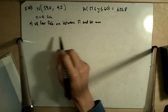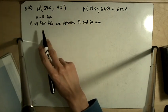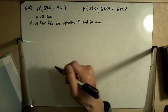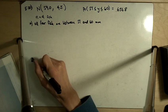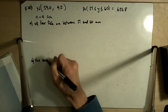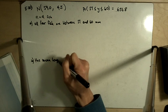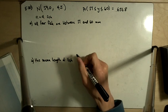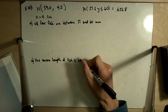So in a group of four fish, the probability that all four fish are between 51 and 60 millimeters is a different question from part B, which is that the mean length of the fish is between 51 and 60 millimeters.